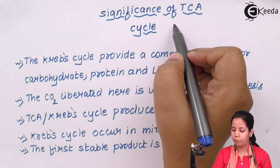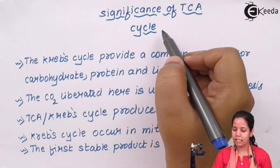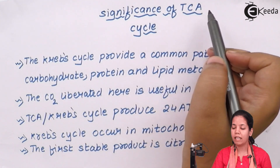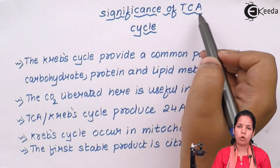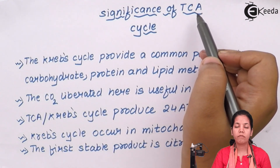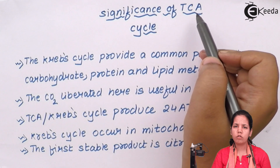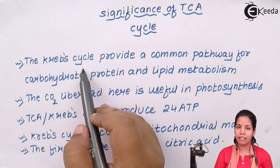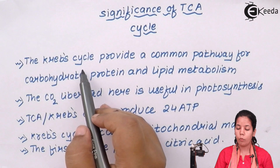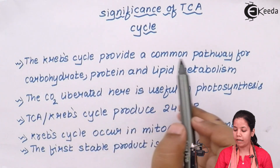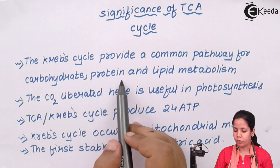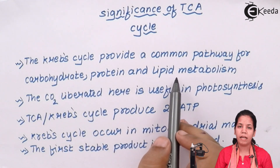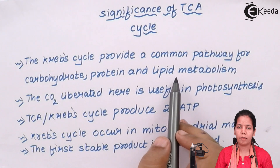The significance, or importance, of TCA cycle or Krebs cycle: TCA cycle means tricarboxylic acid cycle. It is also known as citric acid cycle since the first stable product formed in the Krebs cycle is citric acid. It is known as Krebs cycle because Hans Krebs was the scientist who discovered it. Once photosynthesis is done, the Krebs cycle provides a common pathway for carbohydrate, protein, and lipid metabolism — meaning the breakdown of all these food products is initiated by the Krebs cycle.